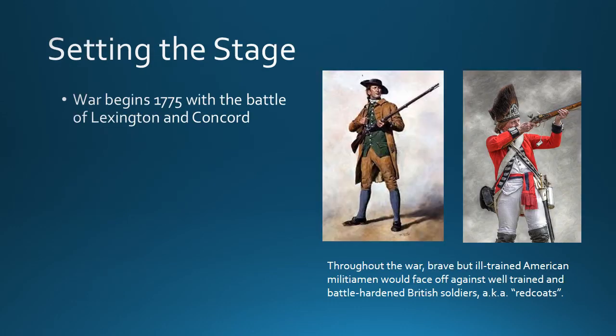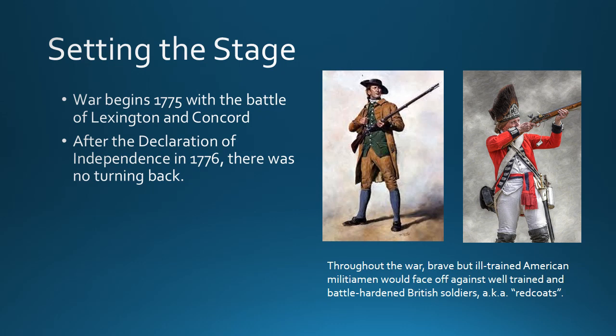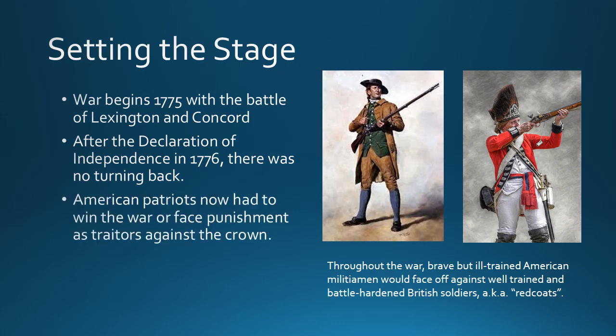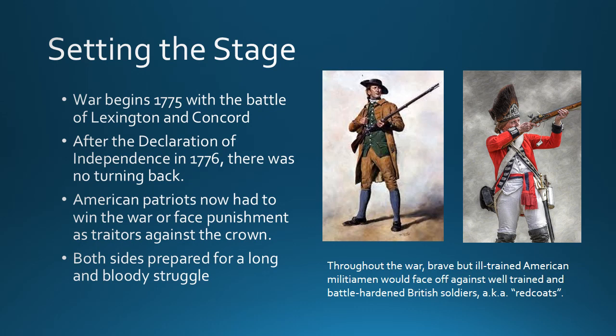Let's begin by setting the stage. The war began in 1775 with the Battle of Lexington and Concord, but it continued for a while at a small scale and it wasn't clear exactly what the Americans were fighting for. Were they fighting just to resist British taxation, or were they fighting for something larger — independence? That question is answered in 1776 with the Declaration of Independence, and after that point there was no turning back. The American Patriots were faced with either completely winning the war or facing punishment as traitors against the crown. There was no middle ground anymore. Both sides now braced for a longer, bloodier, and more serious struggle than they expected at first.